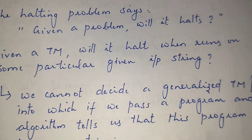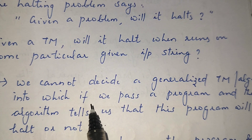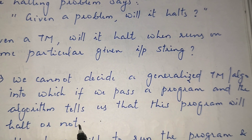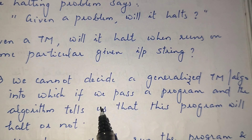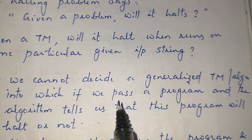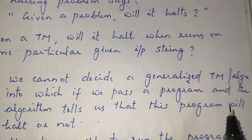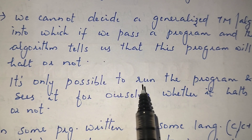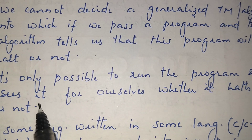There is no generalized Turing machine or algorithm that, given a particular program, can tell us whether that program will halt or not. We cannot design a Turing machine which can ensure that for any given input, the machine will halt. The only method available is trial and error — just give the input and check whether it halts or not.